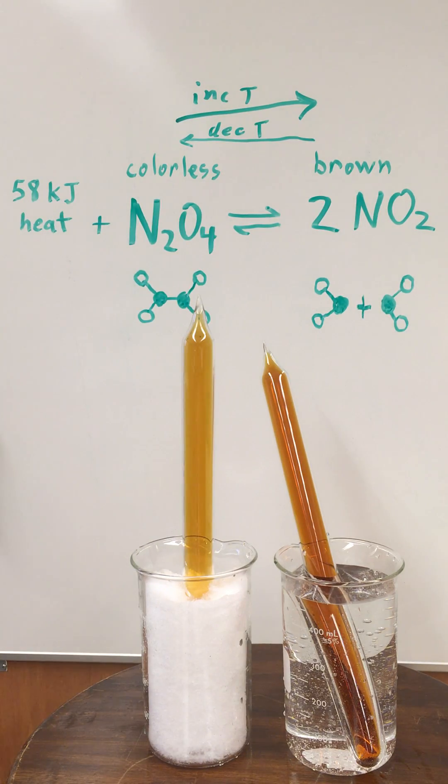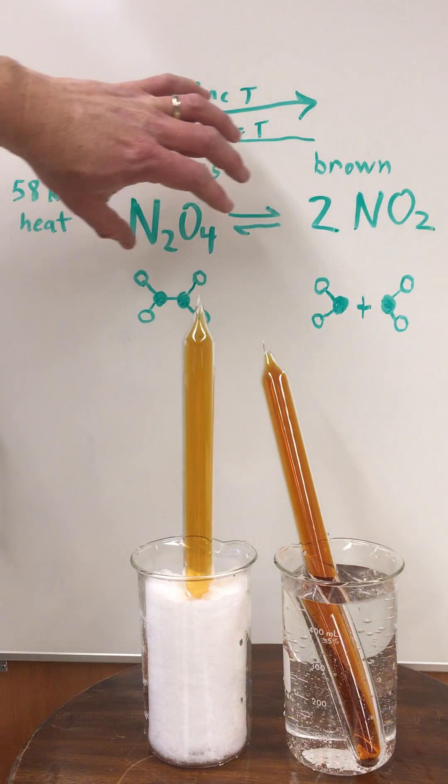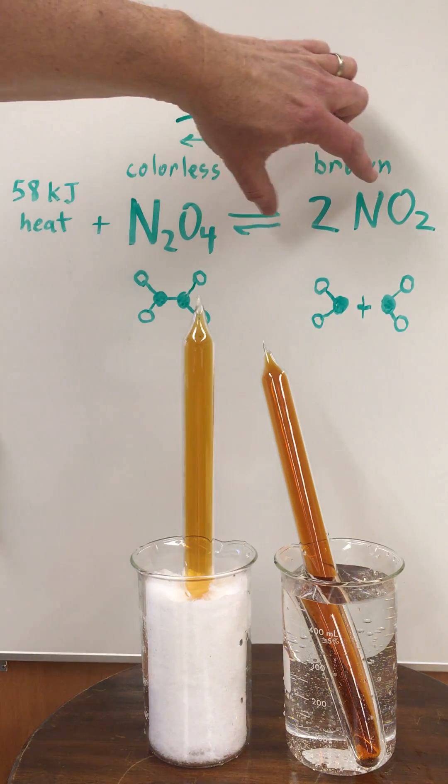And so when we increase the temperature, we can see the system shifting towards a more brown color as we produce more nitrogen dioxide gas.